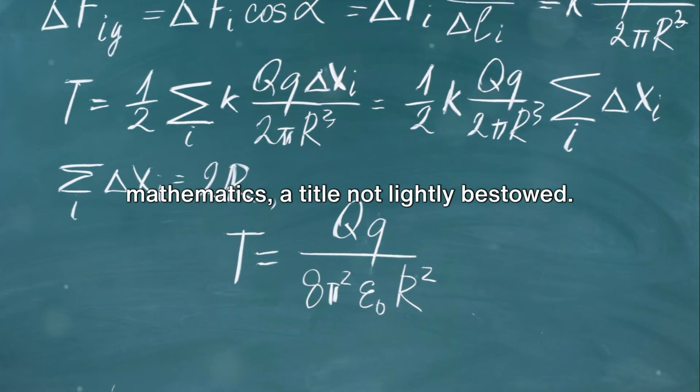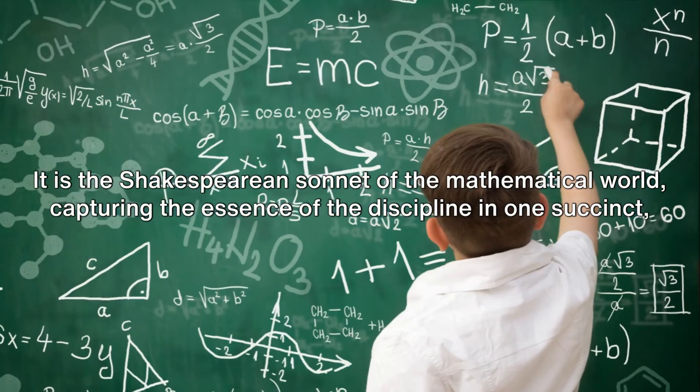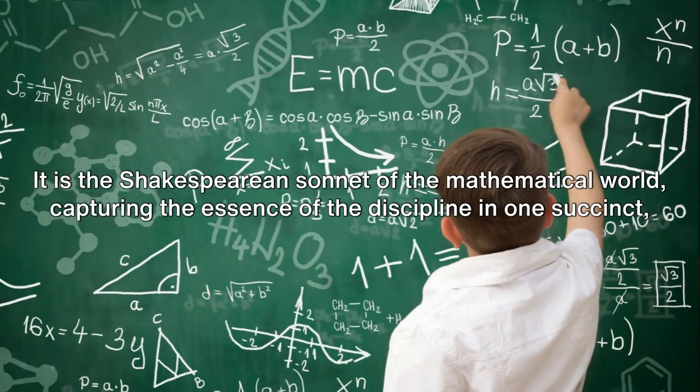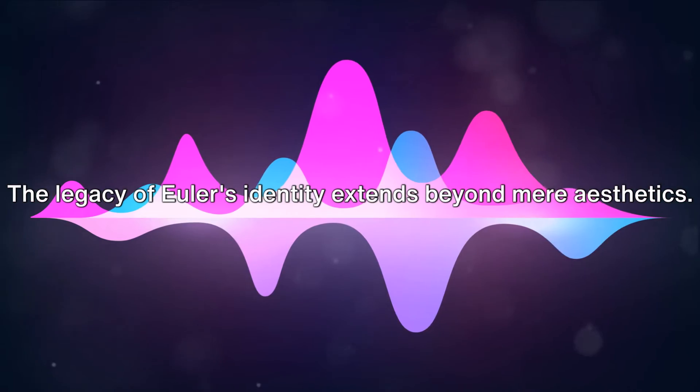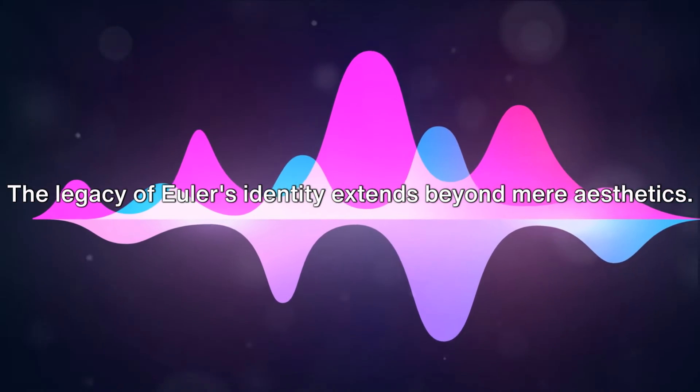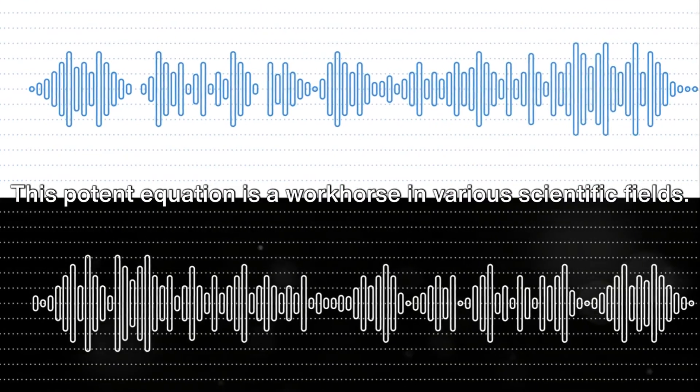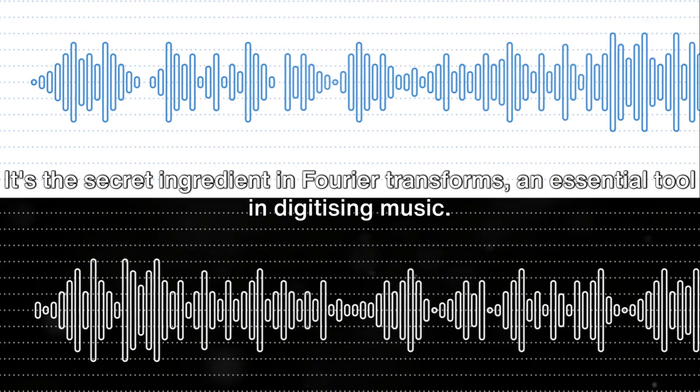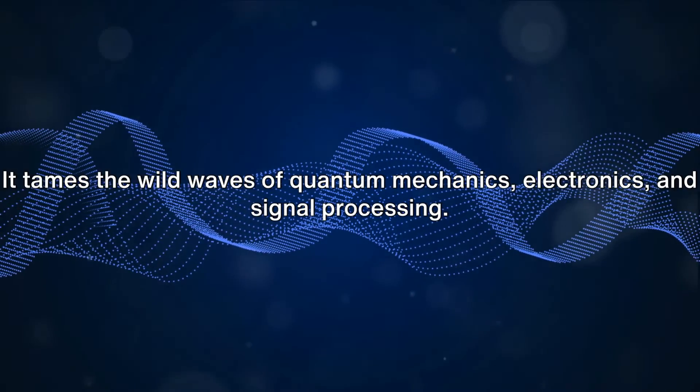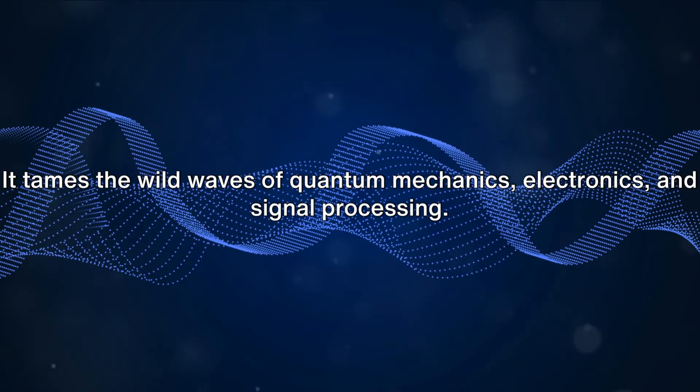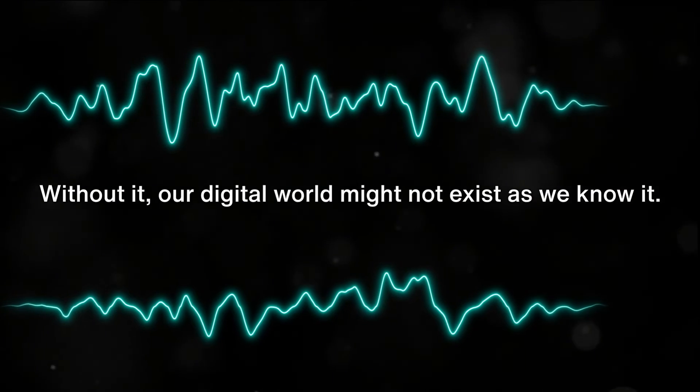It is the Shakespearean sonnet of the mathematical world, capturing the essence of the discipline in one succinct, harmonious formula. The legacy of Euler's identity extends beyond mere aesthetics. This potent equation is a workhorse in various scientific fields. It's the secret ingredient in Fourier transforms, an essential tool in digitizing music. It tames the wild waves of quantum mechanics, electronics, and signal processing. Without it, our digital world might not exist as we know it.